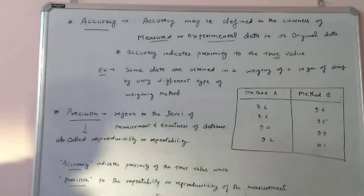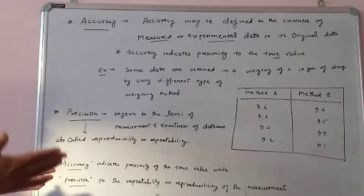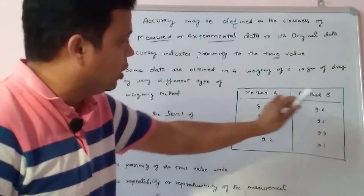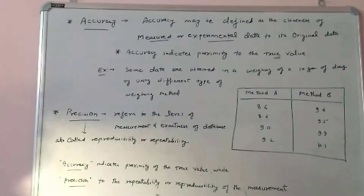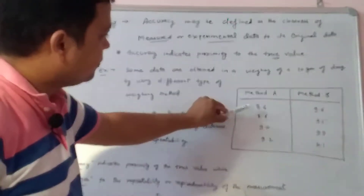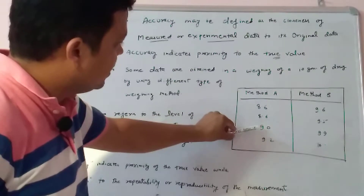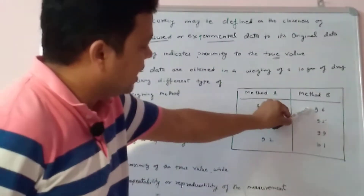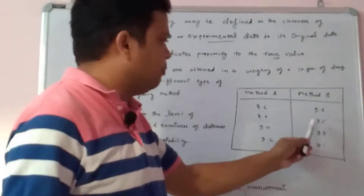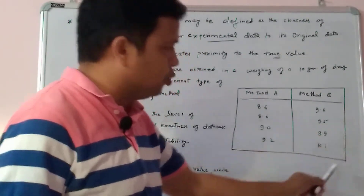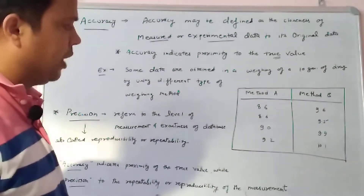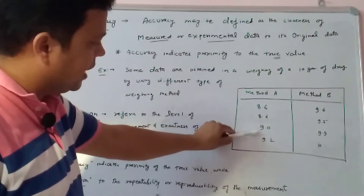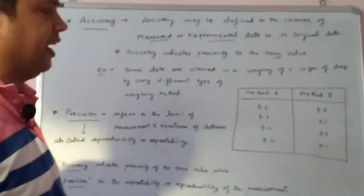These are the two different methods through which I am taking the weight of 10 grams of the drug — these are the measured or experimental values. Method A values are: 8.6, 8.6, 9, 9.2. Method B values are: 9.5, 9.5, 9.9, 10.1. The average of Method B is approximately 9.75, and the average of Method A is approximately 8.855.